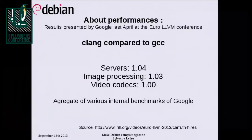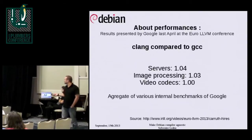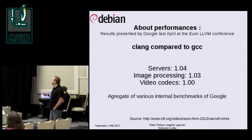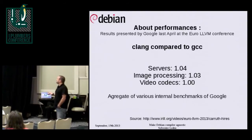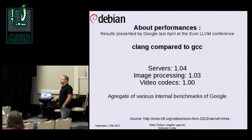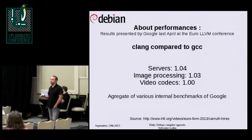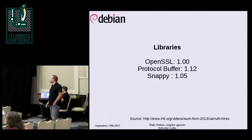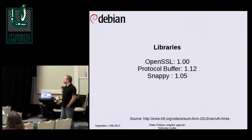Here is a quick slide about performances shown by the Google folks at the Euro LLVM conference. They don't explain how they got these numbers, but they say that Clang compared to GCC is about 4% slower on server workloads. Image processing is 3% slower and video codecs are exactly the same — because they use a lot of assembly code. For libraries: OpenSSL is exactly the same, Protocol Buffer is 12% slower, and Snappy is only 5% slower. So the performances are pretty good.